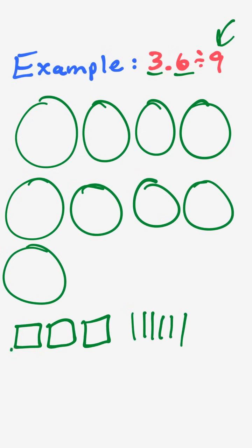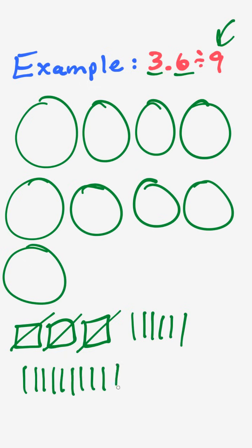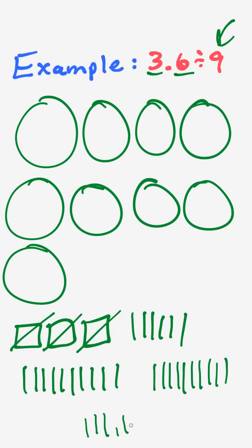I have to regroup all of these because I don't have enough to give to each circle, but if I turn them into tenths I will. So I have to draw 30 tenths — counting out three sets of ten — for a total of thirty tenths ready to distribute.